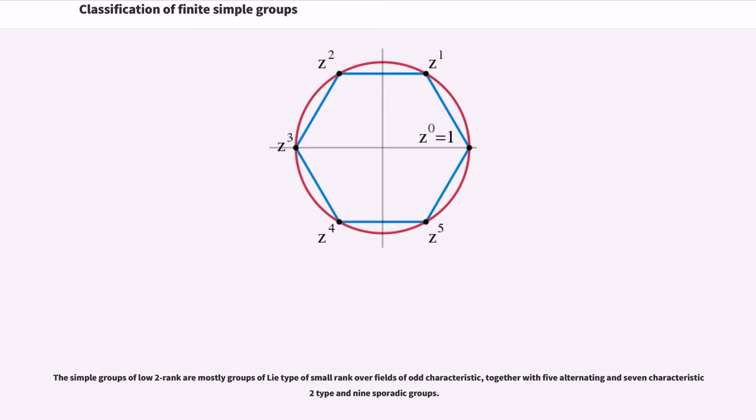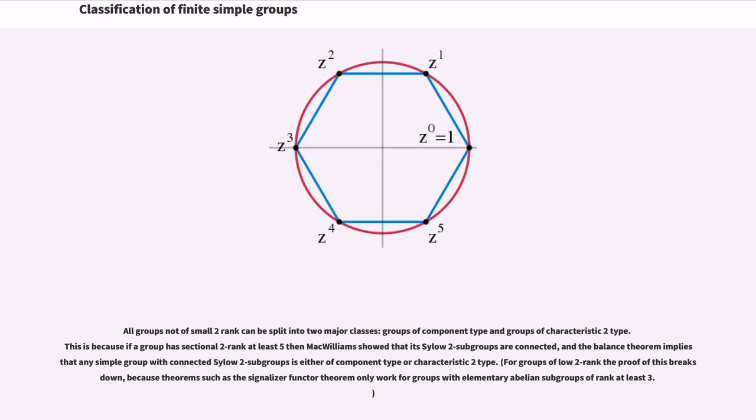The simple groups of low two-rank are mostly groups of Lie type of small rank over fields of odd characteristic, together with five alternating and seven characteristic two-type and nine sporadic groups. The simple groups of small two-rank: the classification of groups of small two-rank, especially ranks at most two, makes heavy use of ordinary and modular character theory, which is almost never used directly elsewhere in the classification.